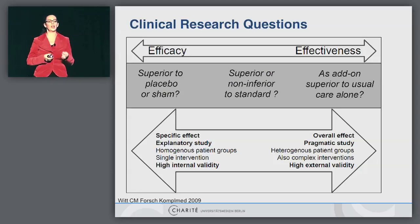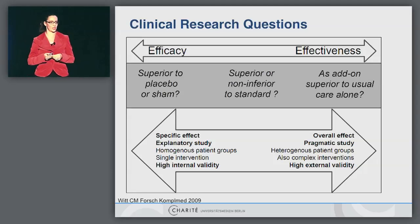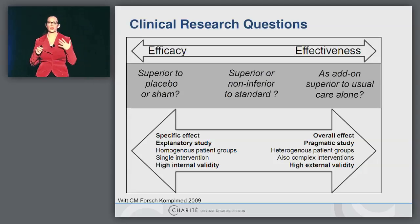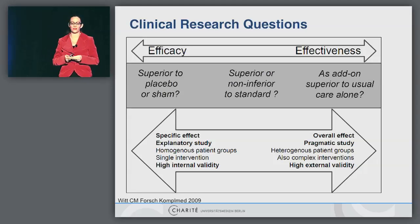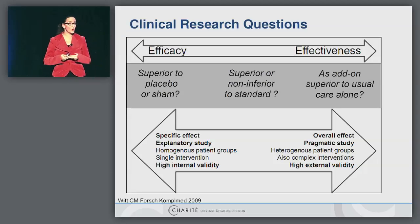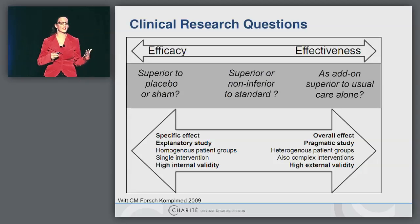When I use efficacy here, I mean we are going for an ideal situation in our study setting — an effect under ideal circumstances where everything is very standardized. Whereas when I go for effectiveness, I usually want to see if something works in usual care in a real, normal, less standardized setting. Effectiveness is much more about adding a treatment to a usual care setting, looking for an overall effect, where everything is more pragmatic and patients are more heterogeneous. Studies compared to standard treatment are very often in the middle — not really on the efficacy side, and often not really on the effectiveness side either.